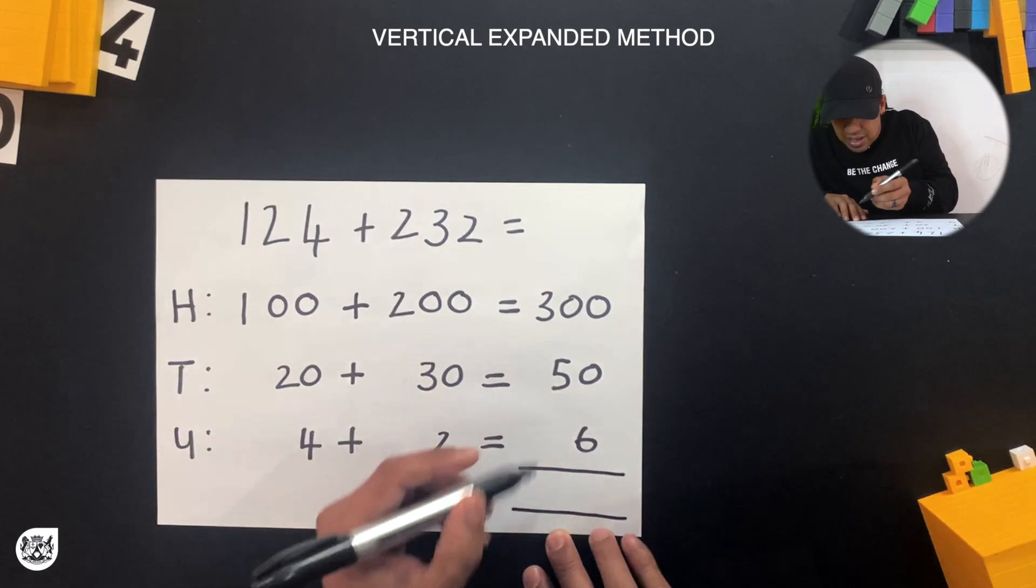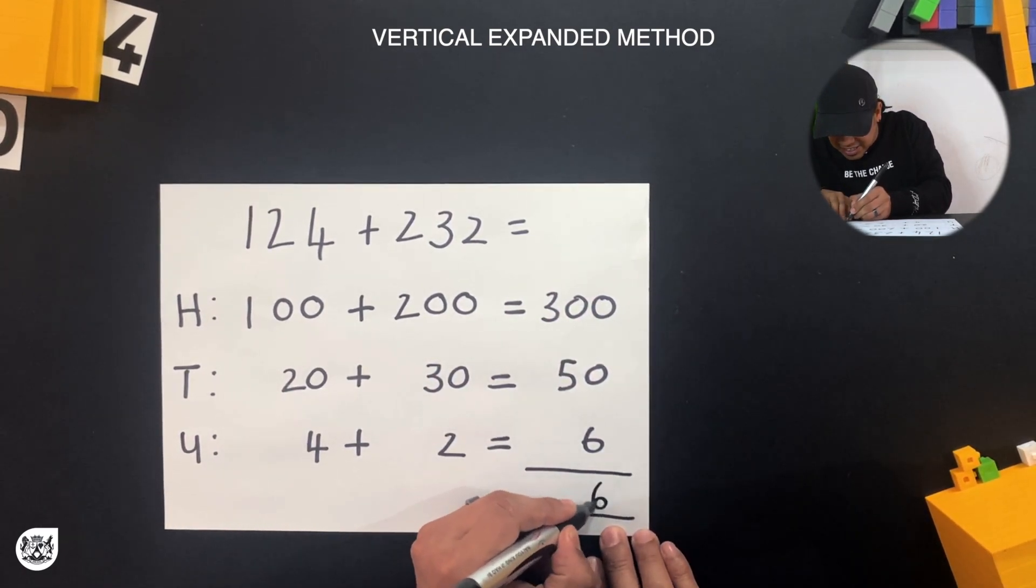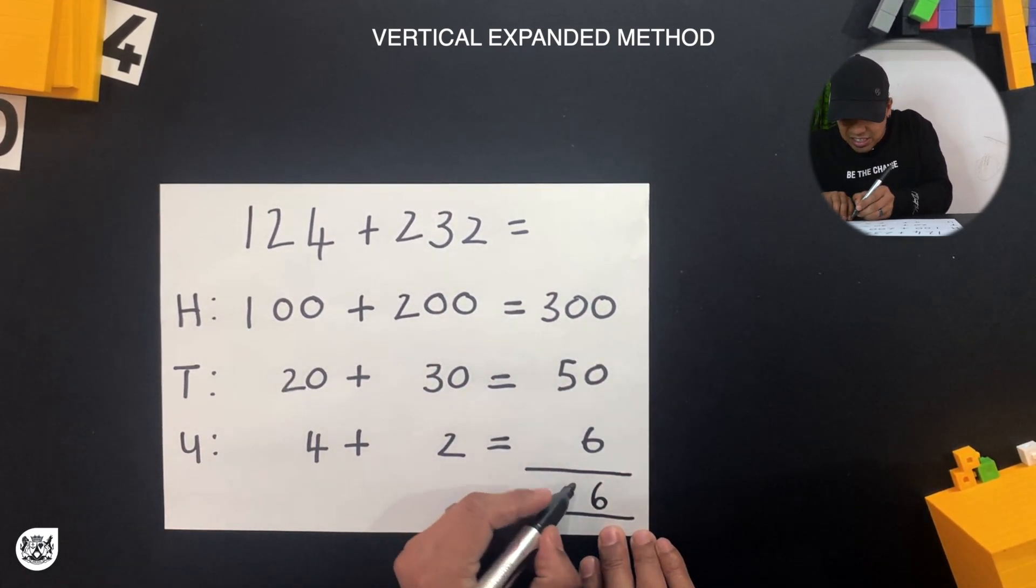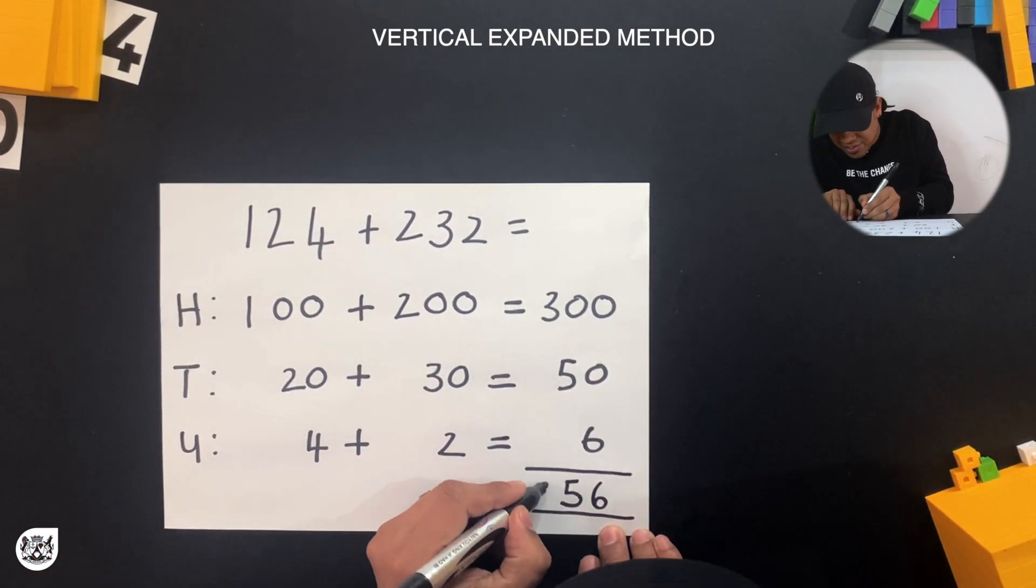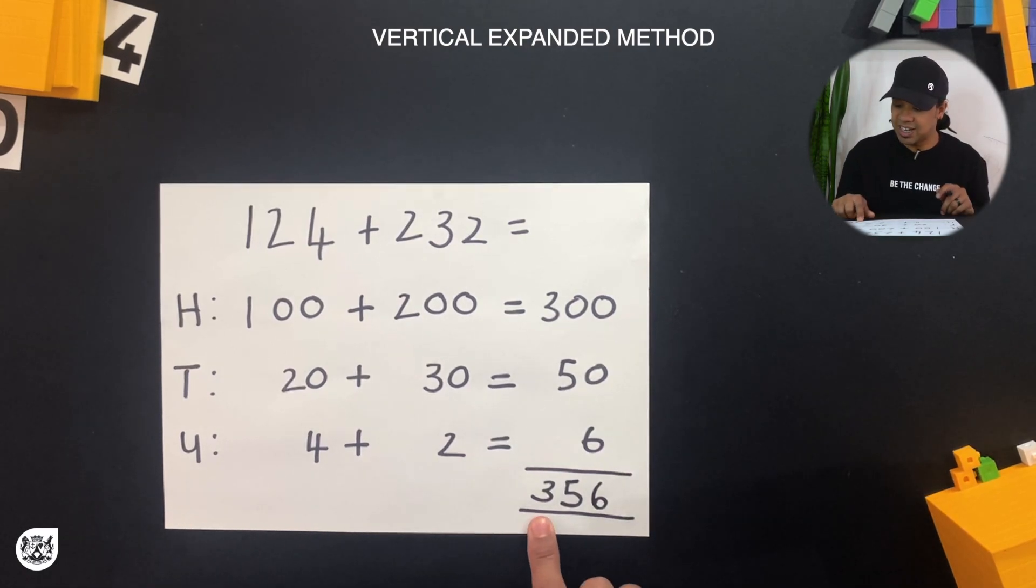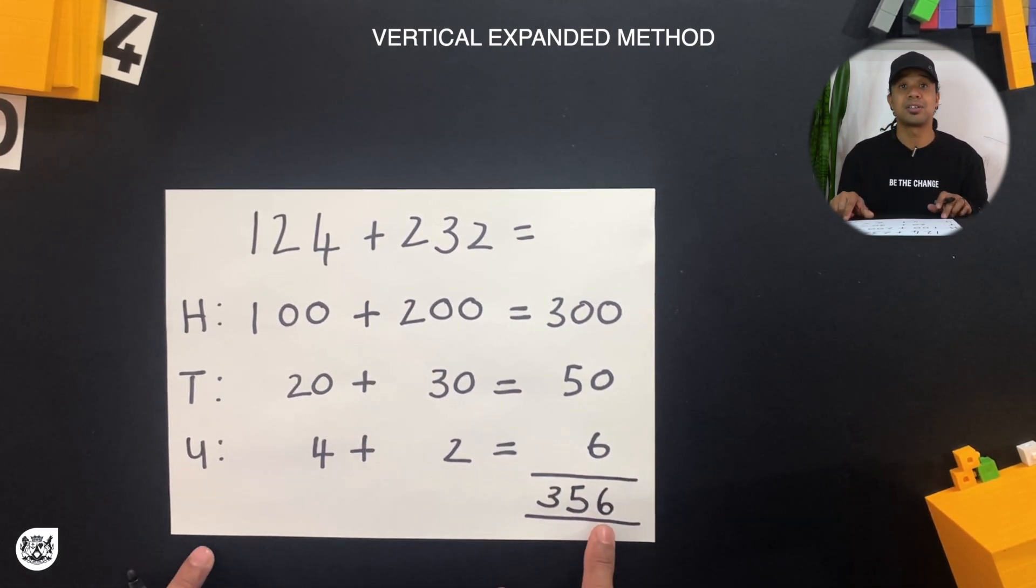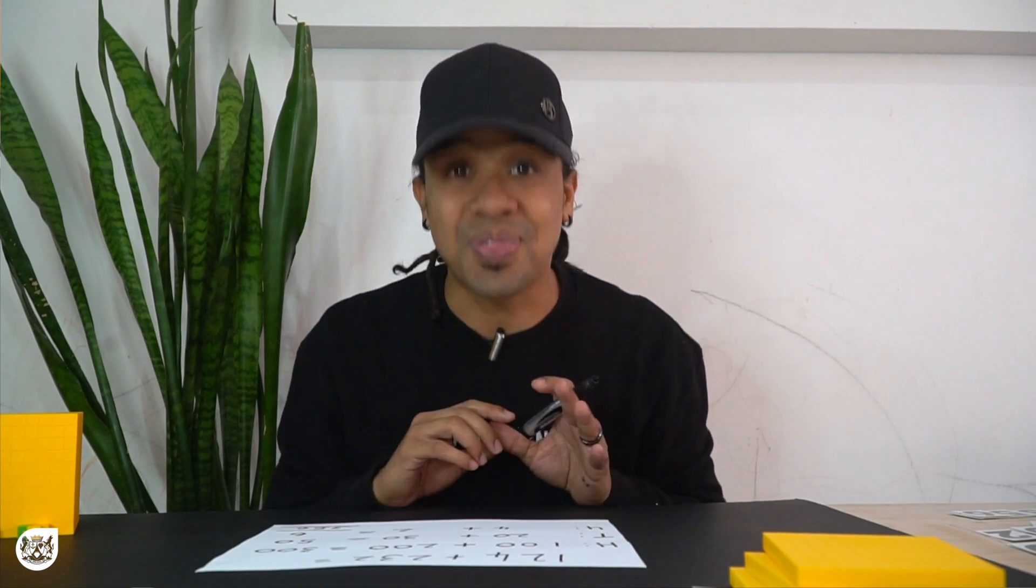So what we want to do now is bring it together. We'll draw two lines over here, and in the ones place we'll have the 6, in the tens place we'll have the 5, and in the hundreds place we'll have the 3. There we go, our answer is 356.